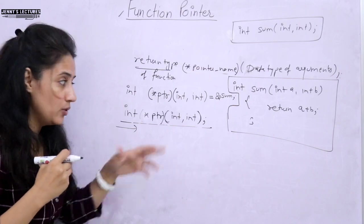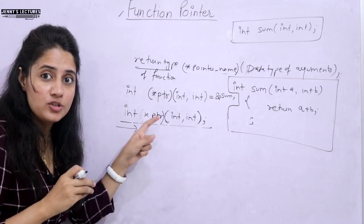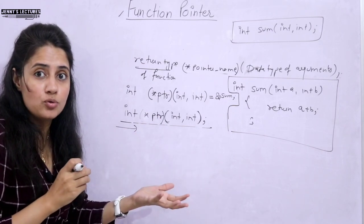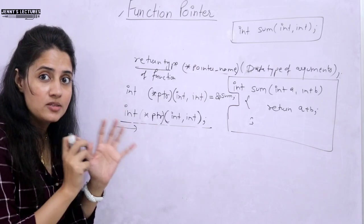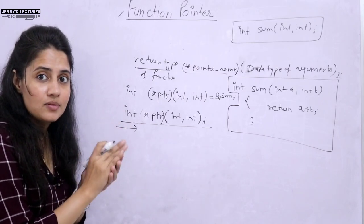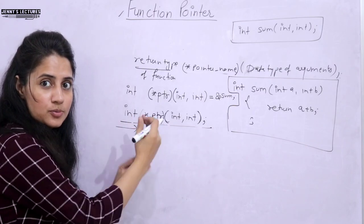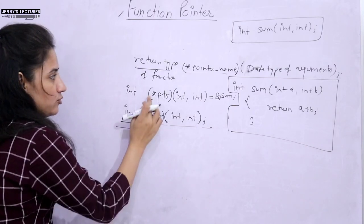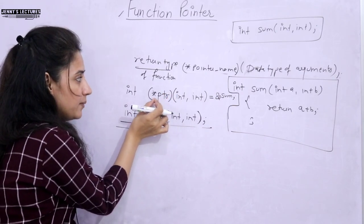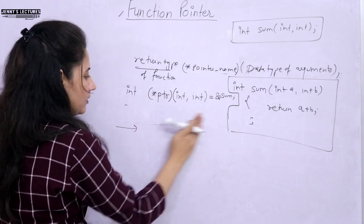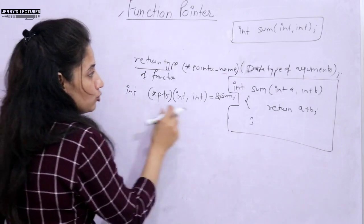I hope you are getting the difference between these two cases. Sometimes they ask this type of question in GATE and in interviews — they write one line and ask what is the meaning of it. It's very confusing when it comes to pointers. That is why when you declare a function pointer, you put the pointer name into brackets; otherwise it will mean a different thing.